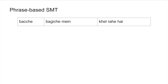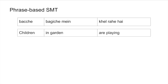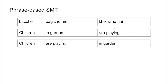Phrase-based SMT uses a phrase-to-phrase dictionary. A phrase is a sequence of words containing either two, three, or n number of words. For example, 'khel rahe' can map to 'are playing,' and 'bagiiche mein' can map to 'in garden.' The language model then plays an important role in producing the final output: 'children are playing in garden.'